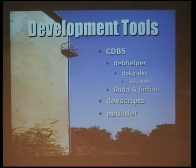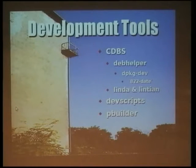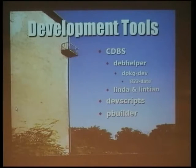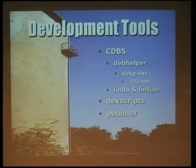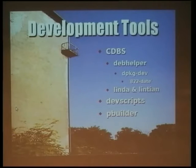A quick rundown of the tools we're using: I mentioned CDBS and debhelper. Below that in a kind of hierarchic way are dpkg development files, which include a command that produces the date format we had in the changelog and copyright file — you just need to redirect it and paste it to the file. Lintian and Linda are two packages there to help you verify that you are indeed packaging something that will match the policy, that you haven't committed any mistakes that will result in your package not being included in the next Debian release.